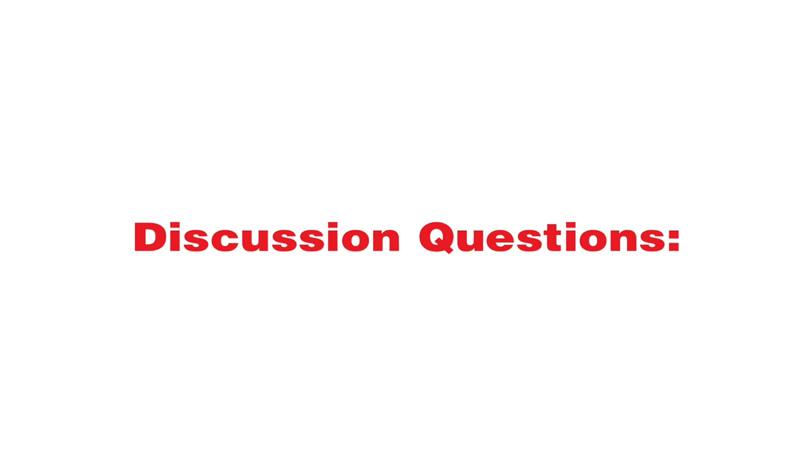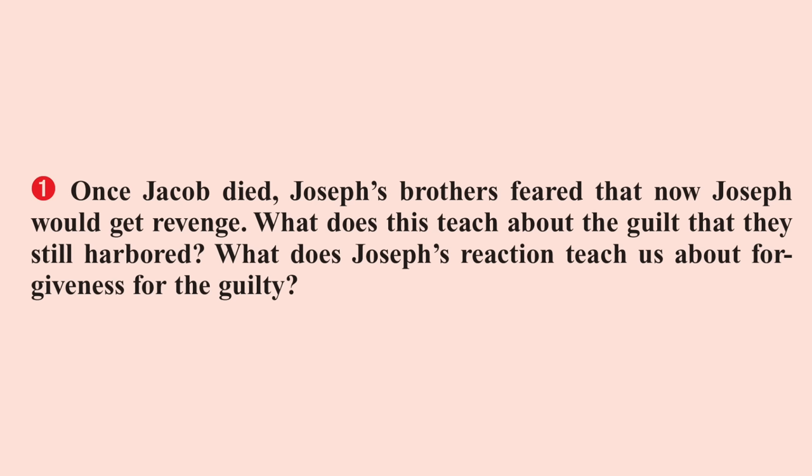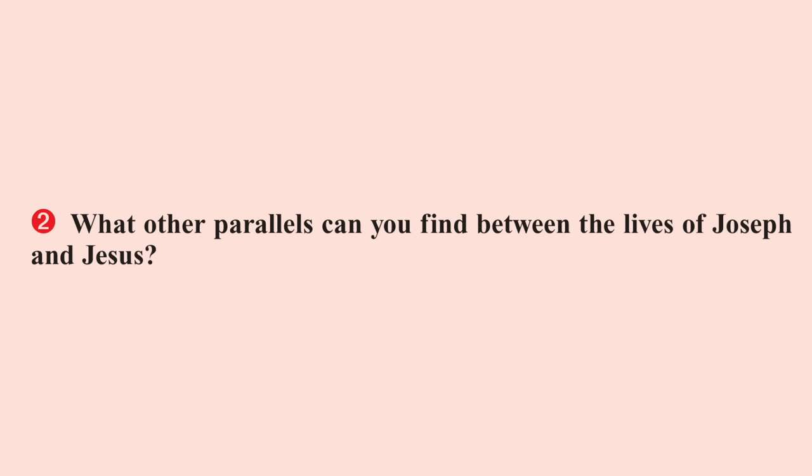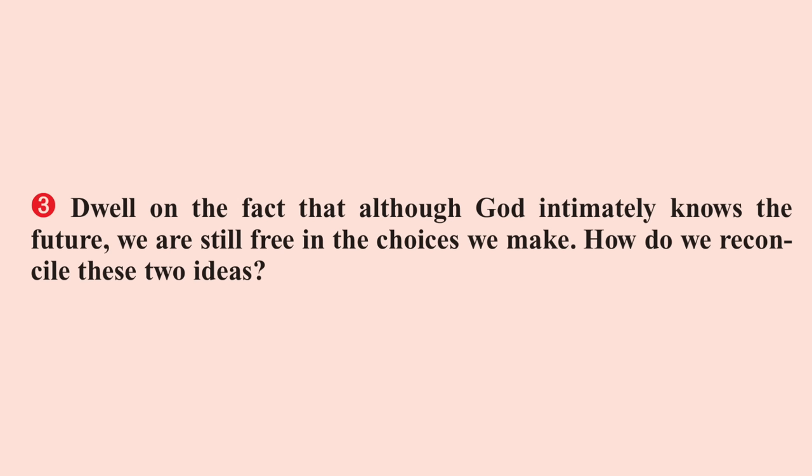That brings us to our three discussion questions for this week. One: once Jacob died, Joseph's brothers feared that Joseph would get revenge. What does this teach about the guilt that they still harboured? What does Joseph's reaction teach us about forgiveness for the guilty? Two: what other parallels can you find between the lives of Joseph and Jesus? Three: dwell on the fact that although God intimately knows the future, we are still free in the choices we make. How do we reconcile these two ideas?